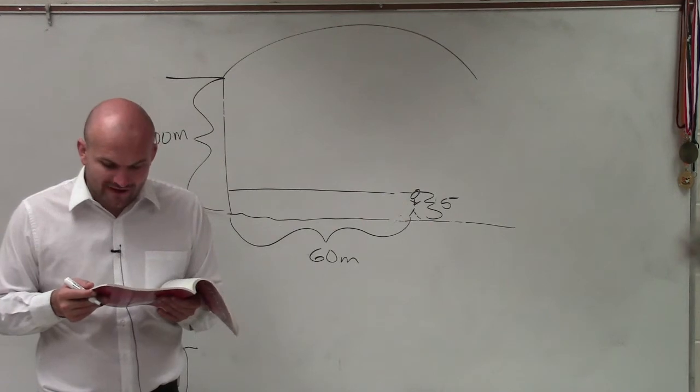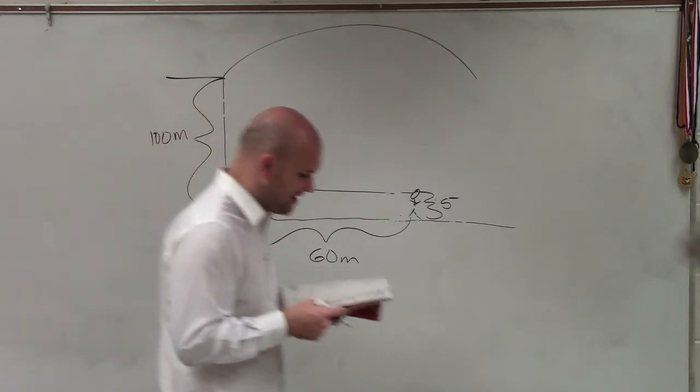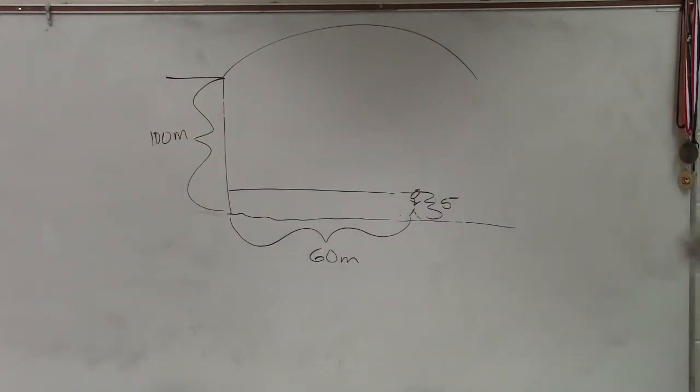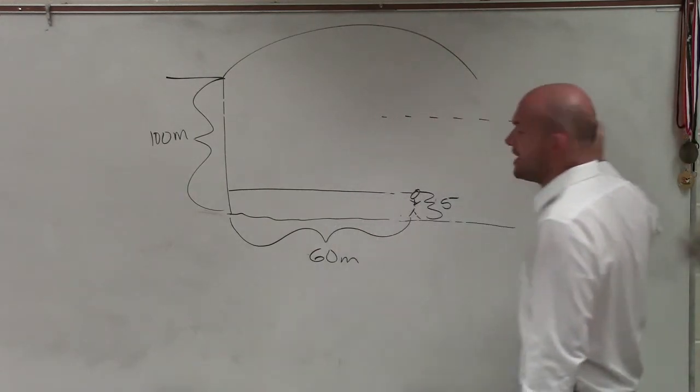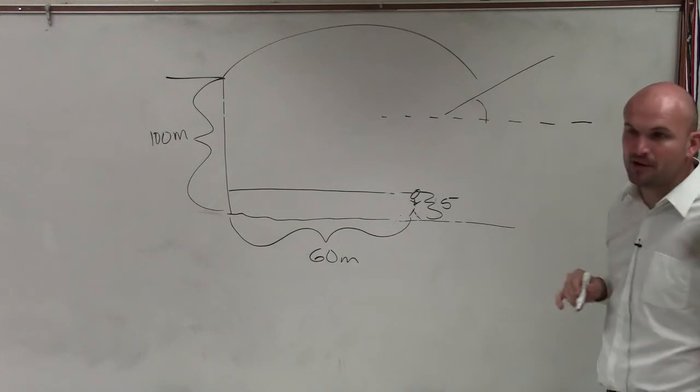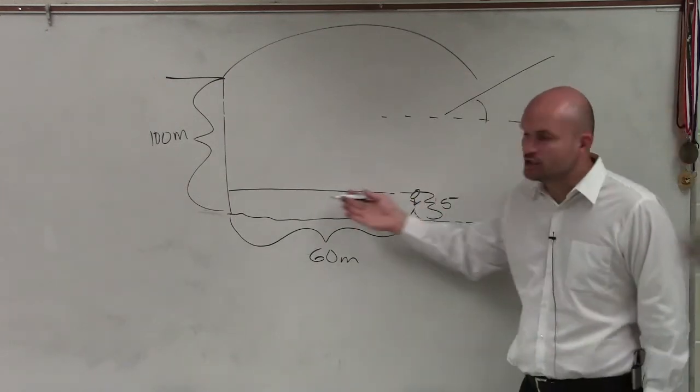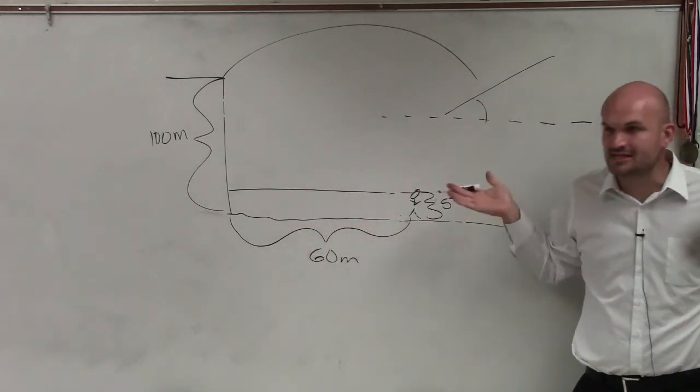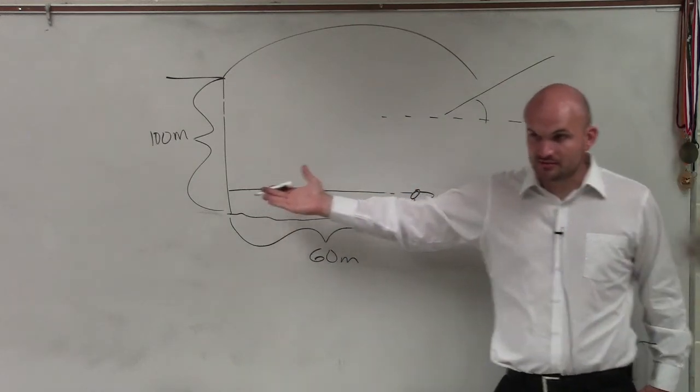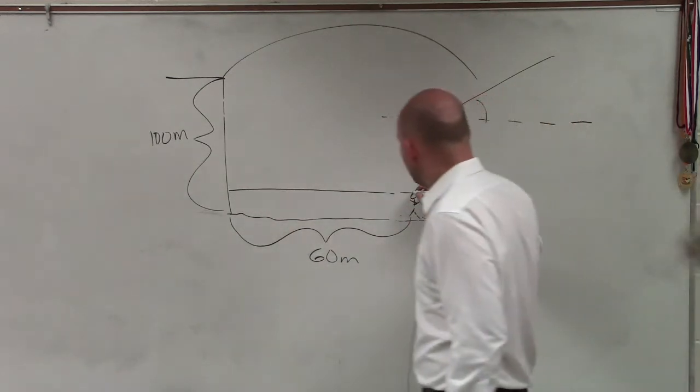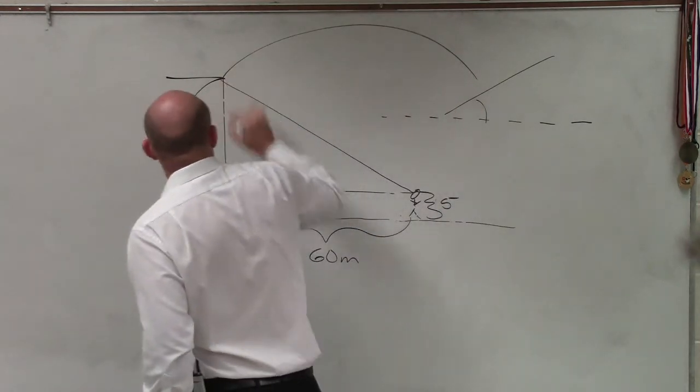What is her angle of elevation to the top of the bridge, round to the nearest tenth of a degree? Now remember, when we're talking about angles of elevation, an angle of elevation is above the horizontal. Is her line of sight a horizontal line? Yes. So we can create an angle to the top of the canyon.